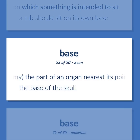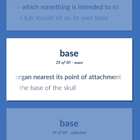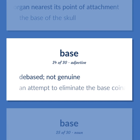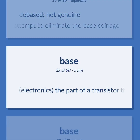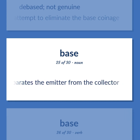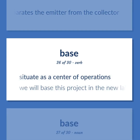Anatomy: the part of an organ nearest its point of attachment. The base of the skull. Debased; not genuine. An attempt to eliminate the base coinage. Electronics: the part of a transistor that separates the emitter from the collector. Situate as a center of operations. We will base this project in the new lab.